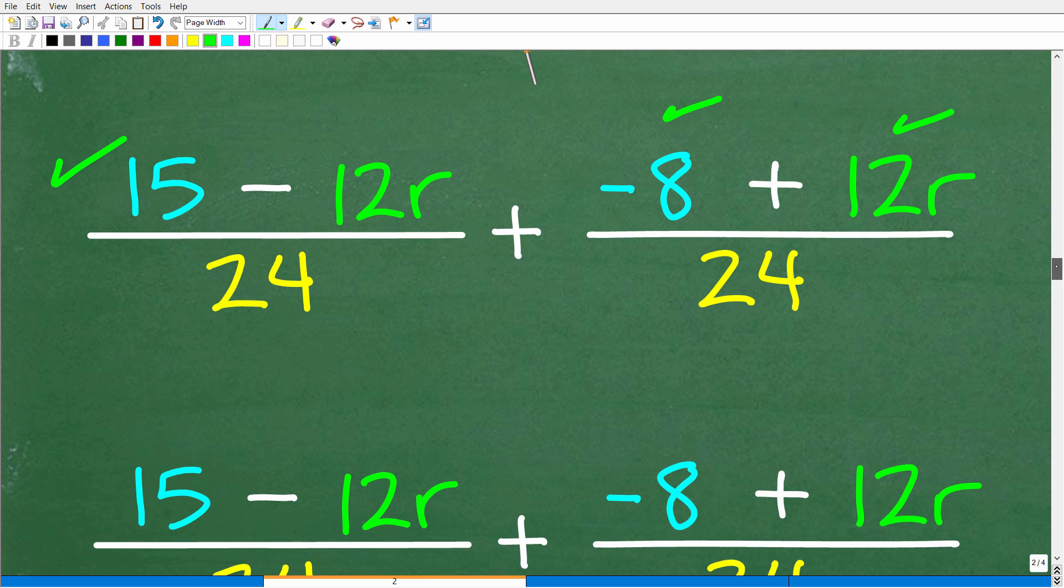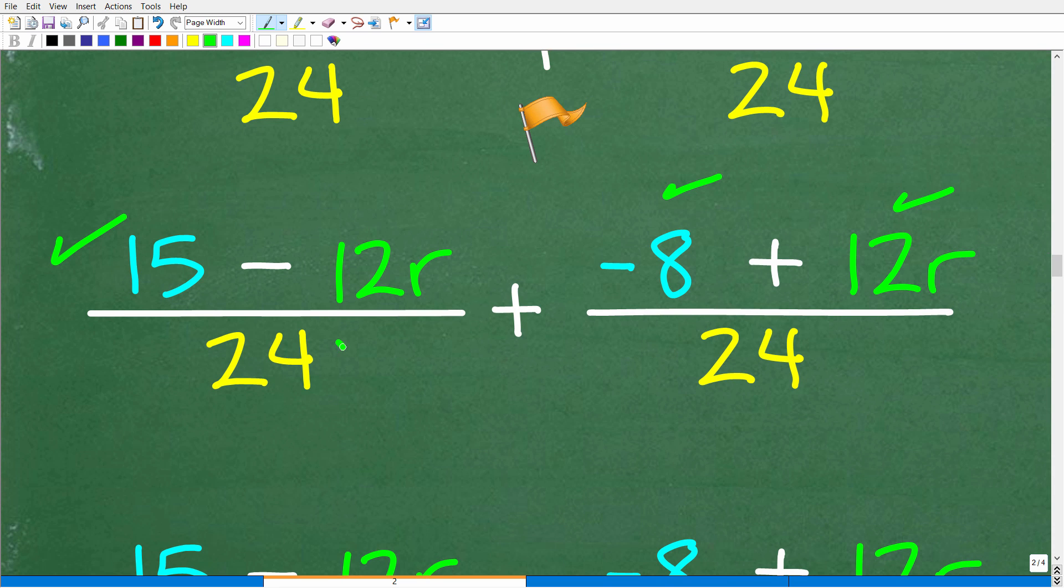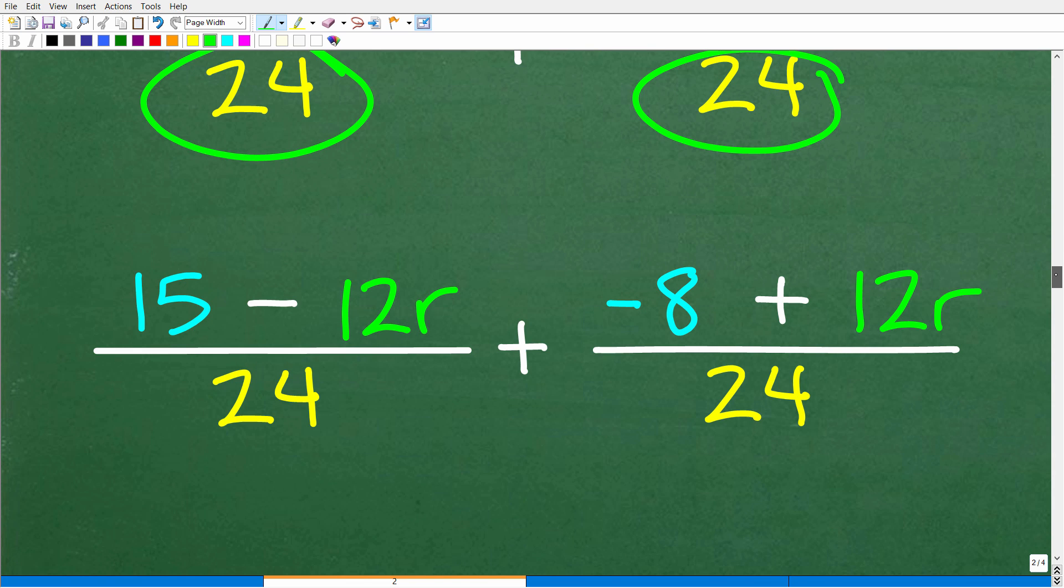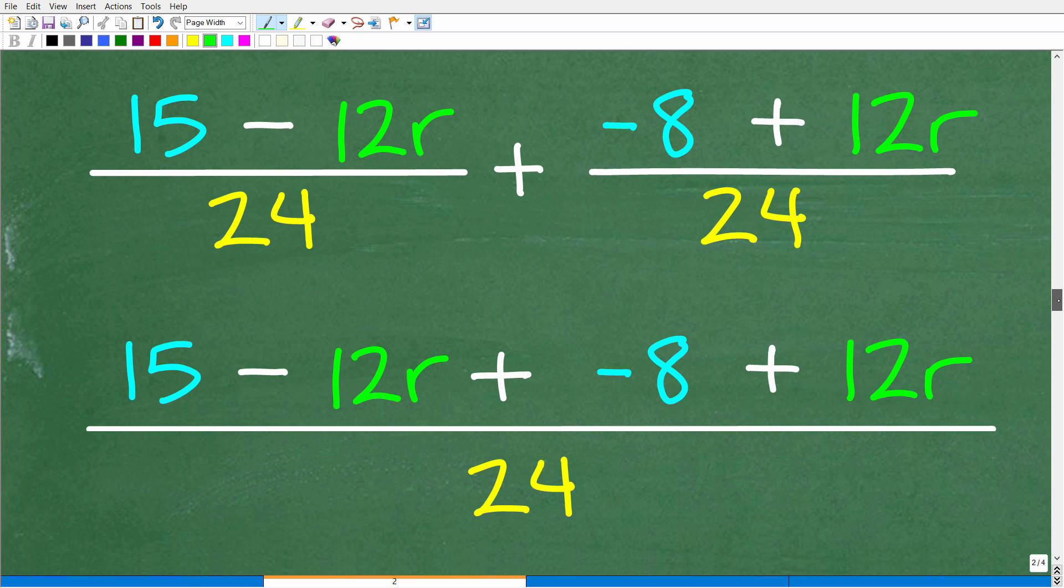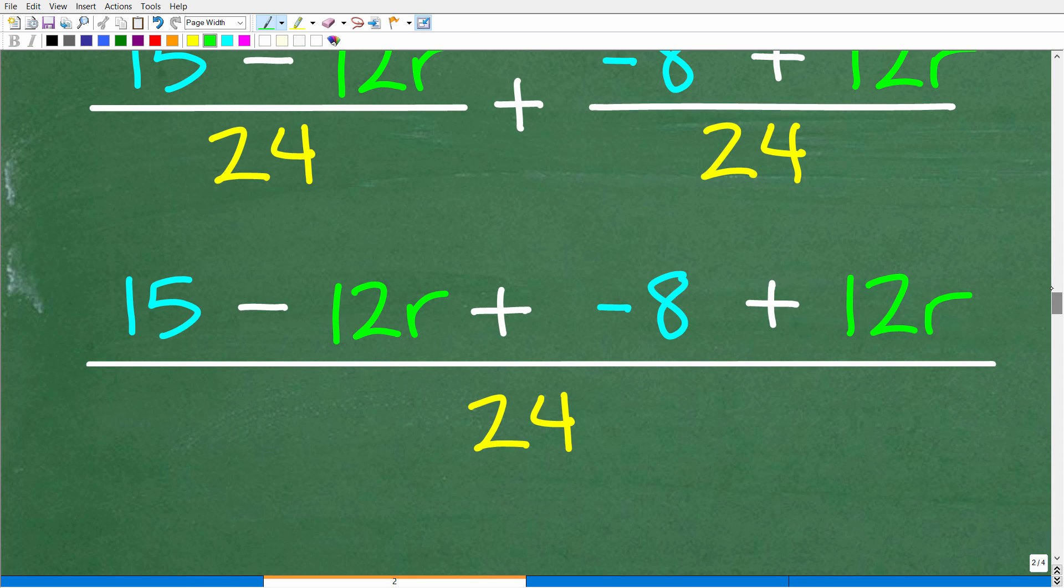So now we can go ahead and add these fractions. We have the same denominator. So we're going to go ahead and simply add the numerators. So let's put this all together and add the numerator. So we're basically going to have one fraction with 24 as the denominator. And we're going to have all this in the numerators. So that's going to look like this.